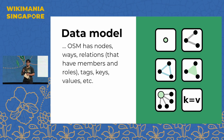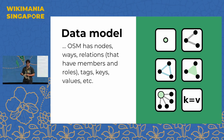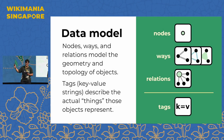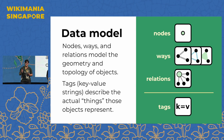For example, if you want to map a park, you use the key-value pair 'leisure equals park.' The data model works as follows: nodes contain geographic locations; ways are a sequence of nodes, where closed ways represent polygons; and open ways might represent rivers or highways.